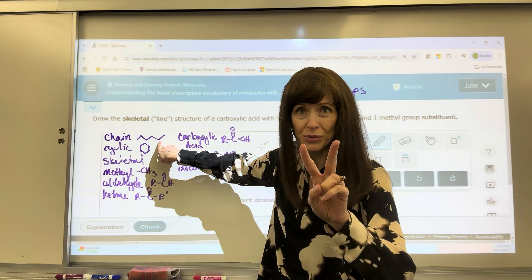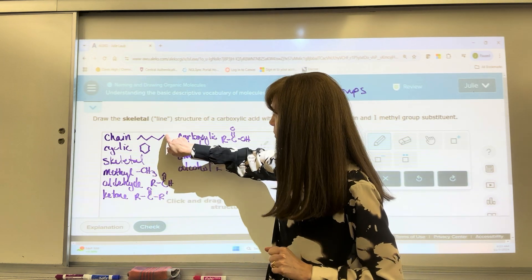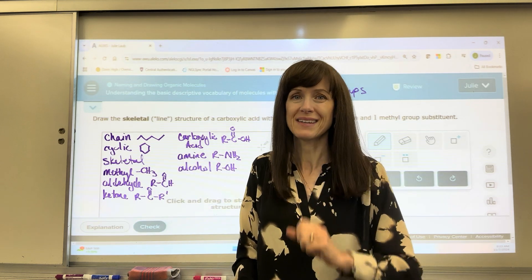So this carbon, for example, would have two hydrogens. This carbon with one bond to a carbon would then have three hydrogens.